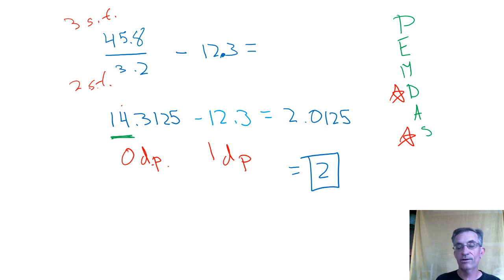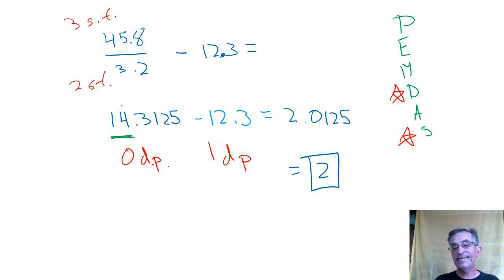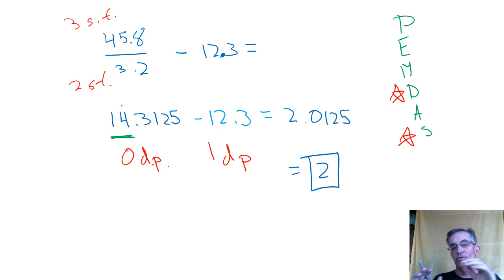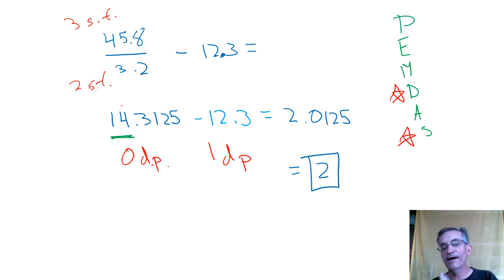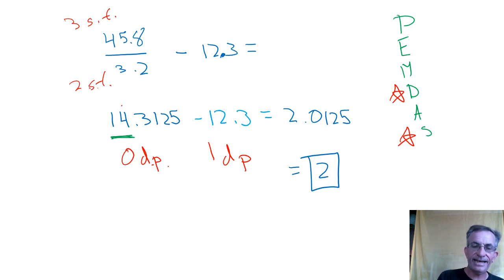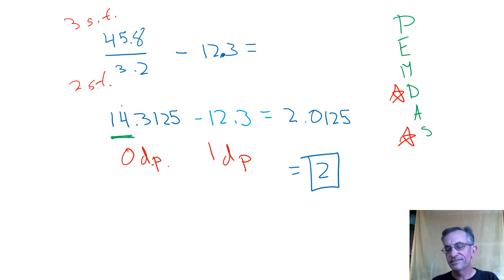Let's try one more. The key is: use all the digits in the math, but only use the sig figs in the rounding. So you use all the digits in the math, but you only use the sig figs in the rounding.